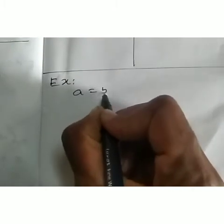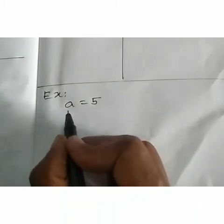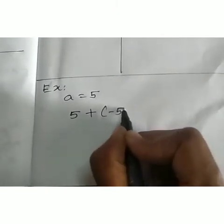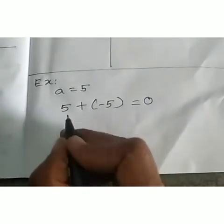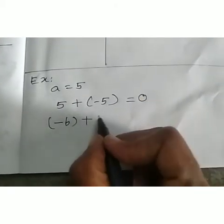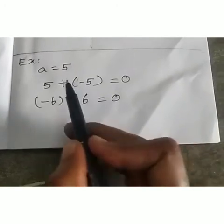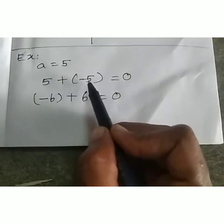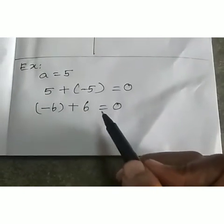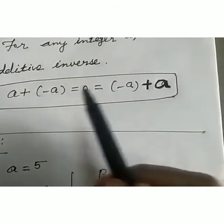For example, a equal to 5. So 5 plus (minus 5) equals 0. And minus 6 plus 6 equals 0. We take any integer and its opposite, add them, and we get 0. This property is known as additive inverse: a plus (minus a) equals 0, or minus a plus a equals 0.